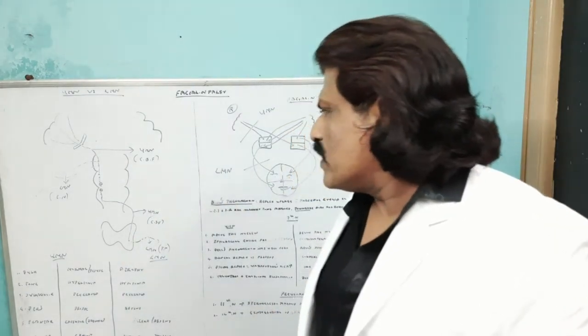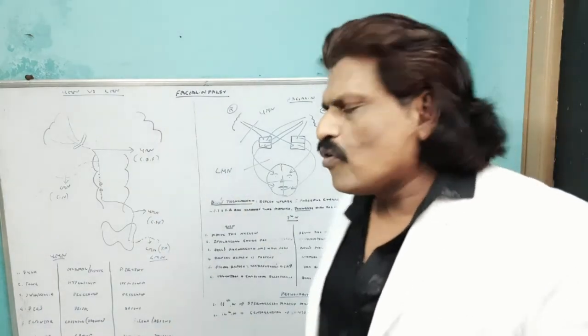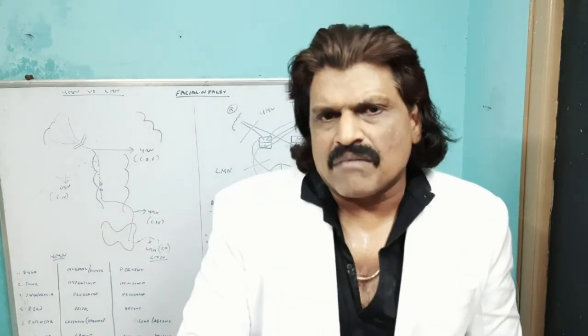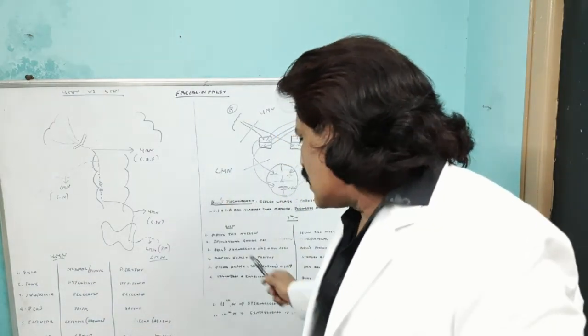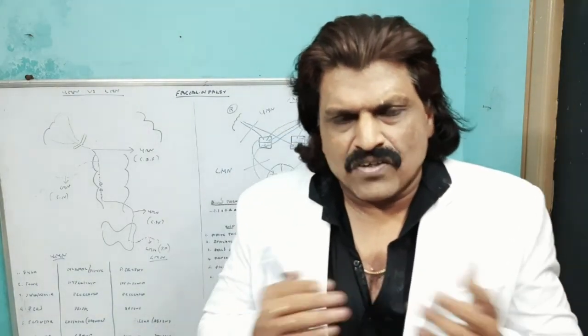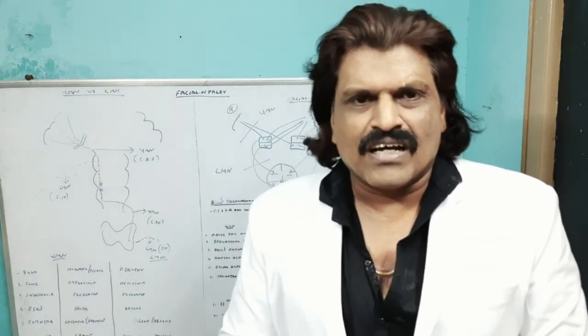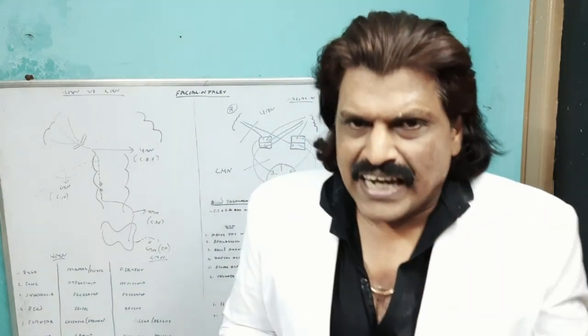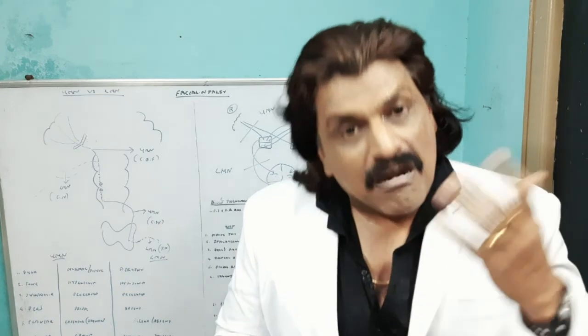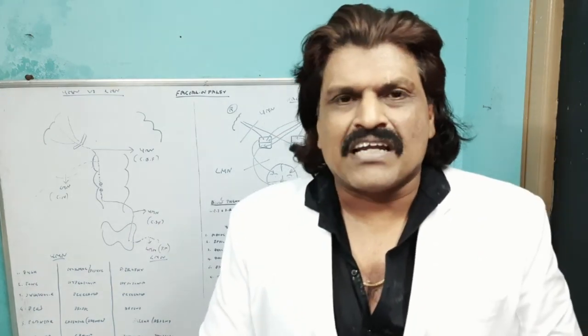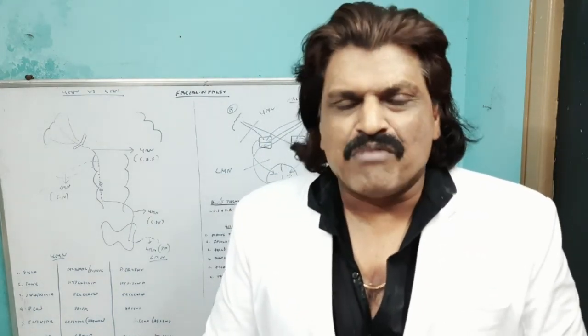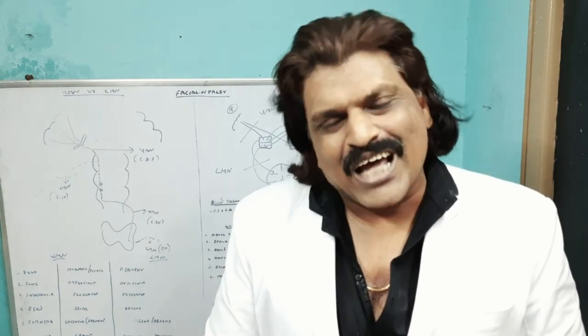These are the peculiarities of the 7th, 11th, and 12th nerves. This is an overview of the differences between upper motor neuron lesion and lower motor neuron lesion, and central facial palsy versus peripheral facial palsy. I hope it was a very interesting lecture and you have understood the basics. If you liked the lecture, please like and subscribe and post your comments on my YouTube channel Dr. Srinivas Medical Concepts and my FB page Dr. Srinivas Concepts. Thank you, bye.